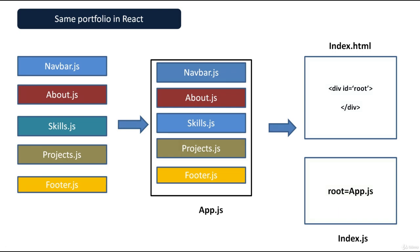When you create a new React application, you get app.js, index.html, and index.js by default — you do not need to create them yourself. The React compiler provides them automatically. You just need to create the child components and add them in the app.js component. In the next video, we will discuss what a component is and what role it plays in React applications. Thank you.